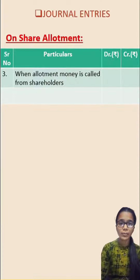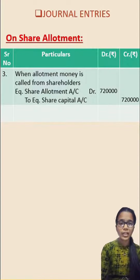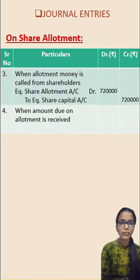Third, when allotment money is made due, then the entry would be equity share allotment account debited to equity share capital account by Rs. 7,20,000.